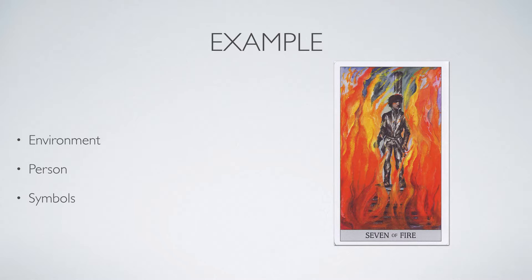Looking at the three points for the Seven of Fire: the environment — this guy is standing surrounded by fire, a wall of fire all around him, right in the middle of it. The person — he looks like a normal guy, his clothes don't appear to be on fire, and if you look at his face and expressions, he doesn't look worried about the fire. It doesn't bother him that much. I've been binge-watching Game of Thrones and looking at this card I'm reminded of the nearest Targaryen doing her thing with dragons.